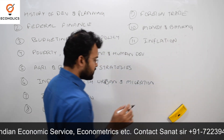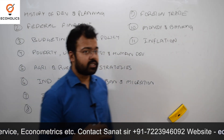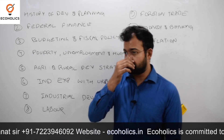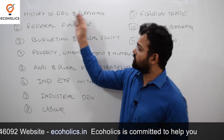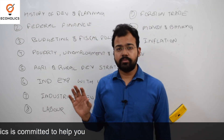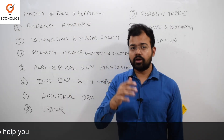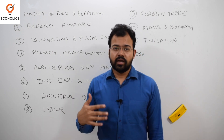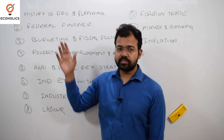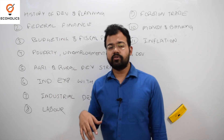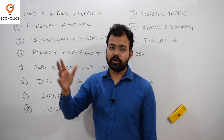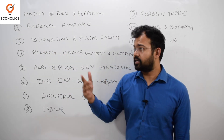Now, listen carefully about the resources you need to refer to for this syllabus. For the history of development and planning, you can use any Indian economy book like Uma Kapila's 'Indian Economy Since Independence 1947' — this is the best book to cover this topic. For federal finance, you will not find a single book, so you have to refer to reports like the Sarkaria Commission report, which you can download from the government website.